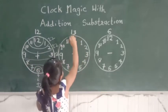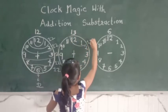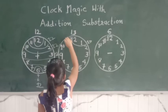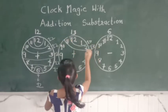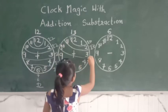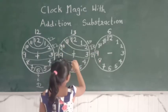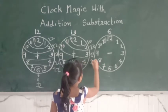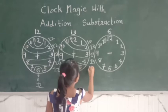And then for 13, 12 plus 1 is 13. 11 plus 2 is 13. 10 plus 3 is 13. 9 plus 4 is 13. 8 plus 5 is 13.